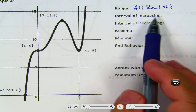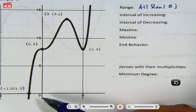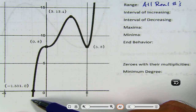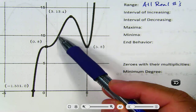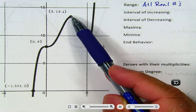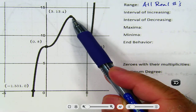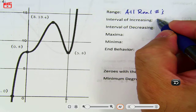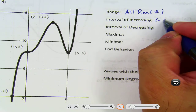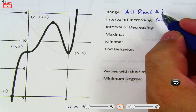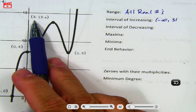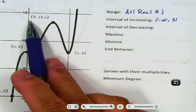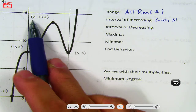So, interval of increasing. You always look at it left to right. So it's infinitely this way, and it keeps going up and stops going up here. So I'll go negative infinity up to 3. And remember, you're looking at the x values, not the y values. You're looking at the x values. So I stop at 3.